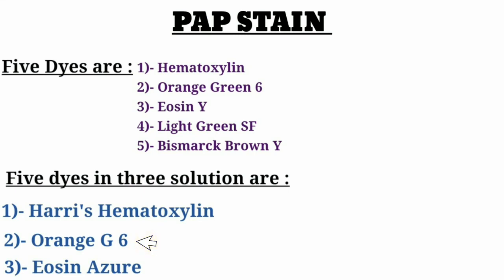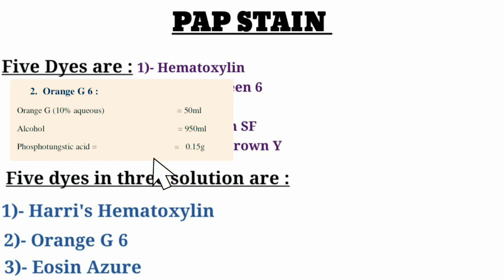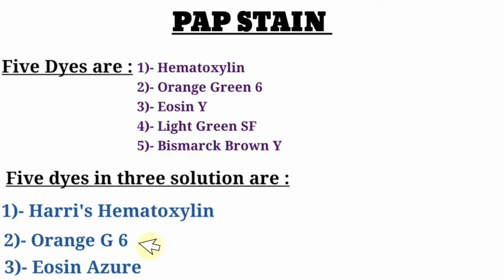Second solution for Pap stain is Orange G6. To prepare Orange G6 we need: Orange G 10% aqueous solution 50ml, alcohol 950ml, and phosphotungstic acid 0.15g. Note: a question for viewers — what does the '6' in Orange G6 denote? Please reply in the comments section.